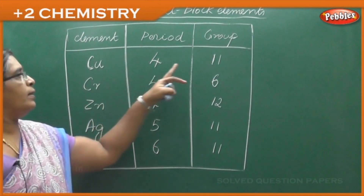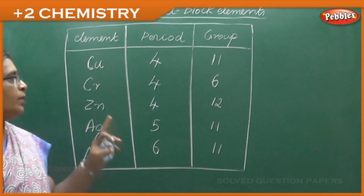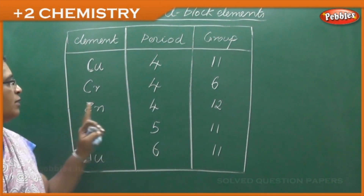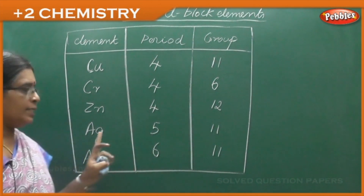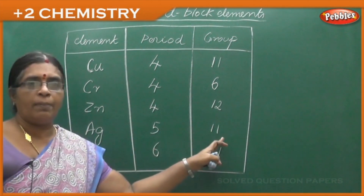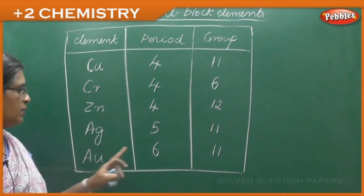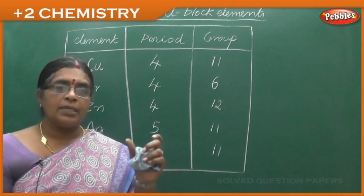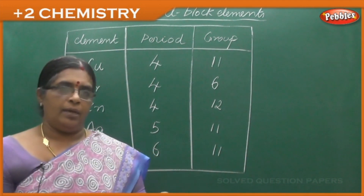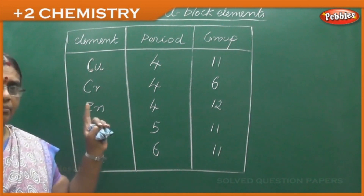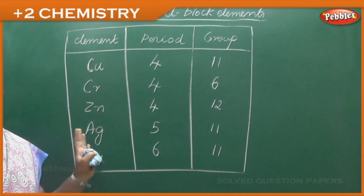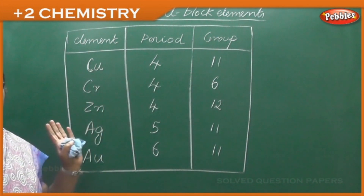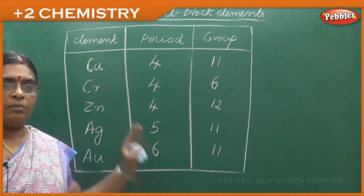Copper is in the fourth period, group number 11. Chromium is in the fourth period, group number 6. Zinc is in the fourth period, group number 12. Silver is in the fifth period, group number 11. Gold is in the sixth period, group number 11. For example, if a problem says element A belongs to group 11, period 4 — remember this tabular column and you can write: it is copper. At least get that one mark.